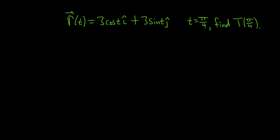In this problem, we're going to find the unit tangent vector given this vector value function r, and we're going to evaluate it at t equals pi over 4.